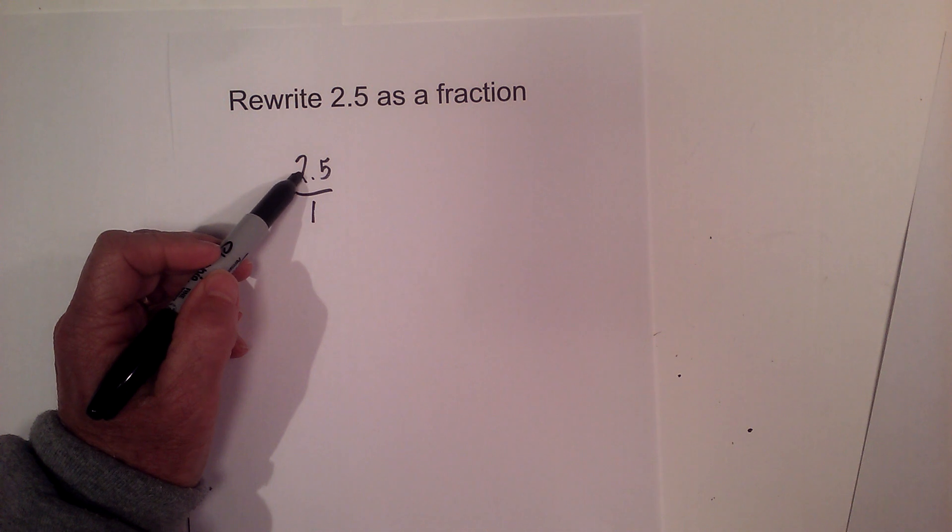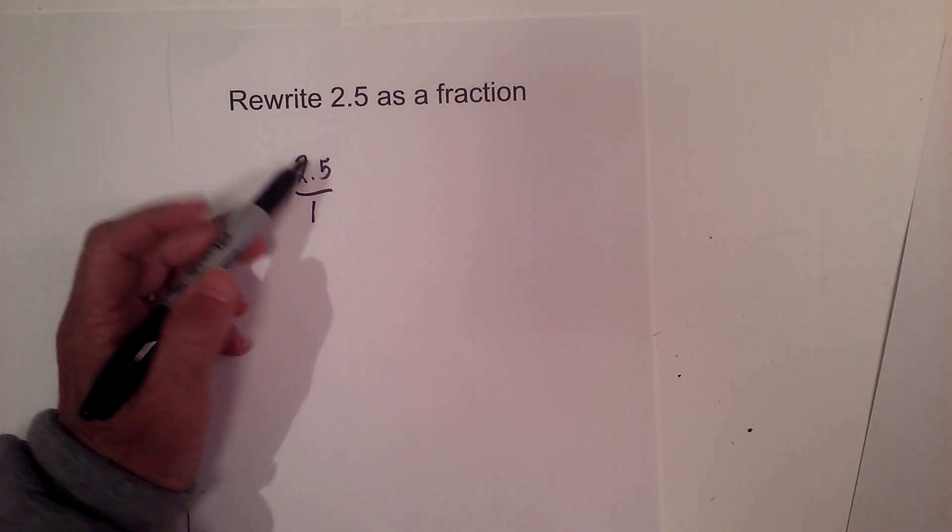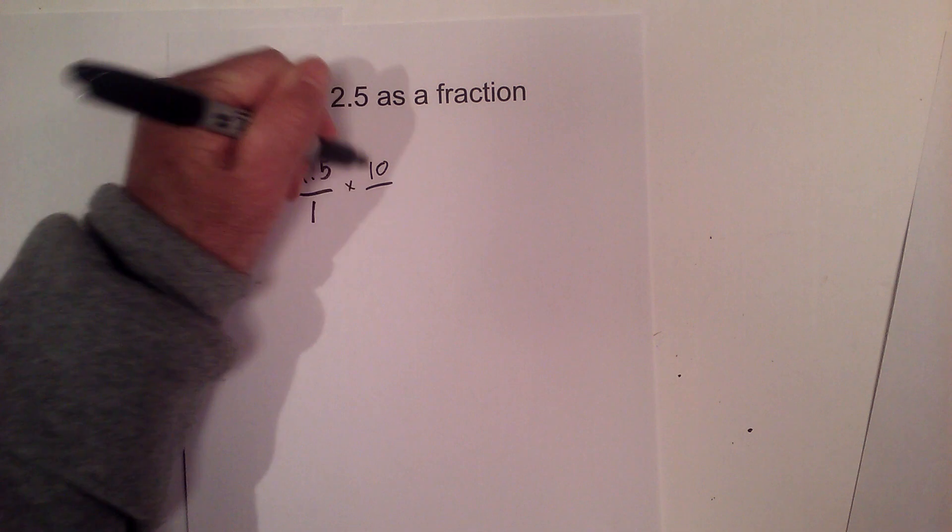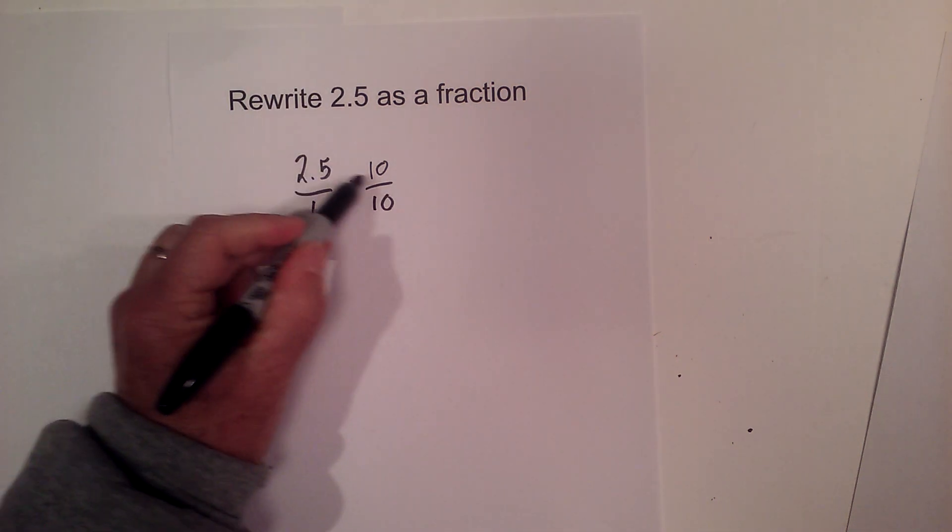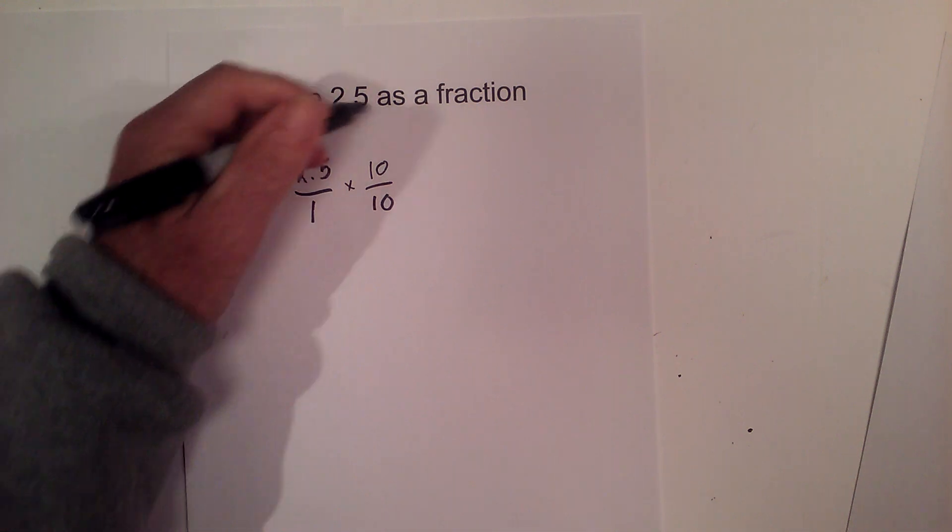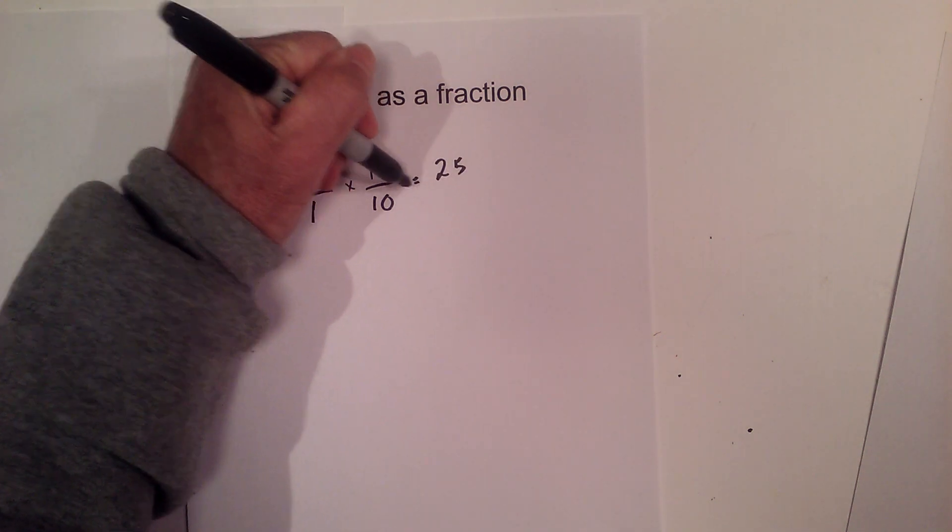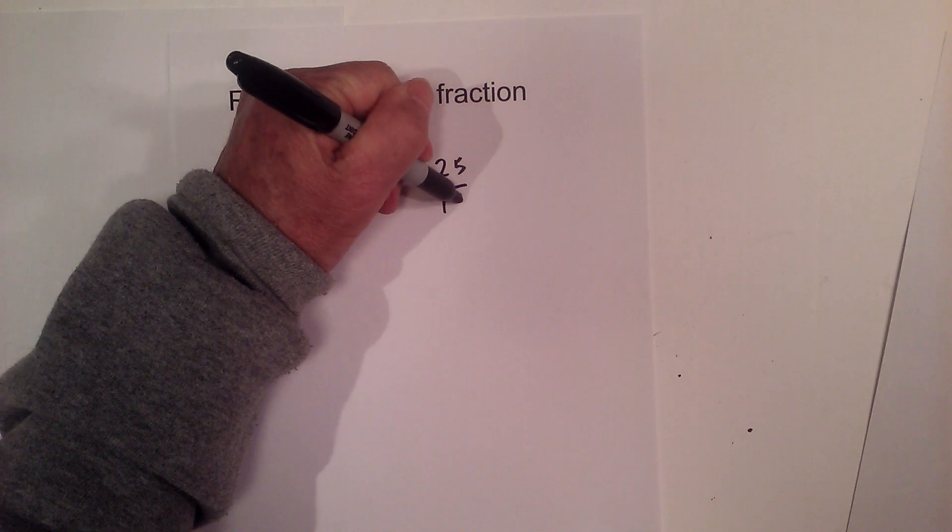I know this is ones, I need to get it to the tens so I'm going to multiply it by 10 and I'm going to do the same to the bottom of the fraction. So when I multiply straight across, 2.5 times 10 is 25 and 1 times 10 is 10.